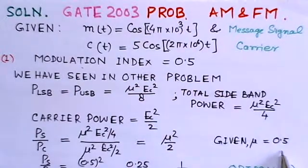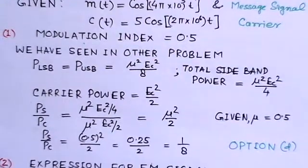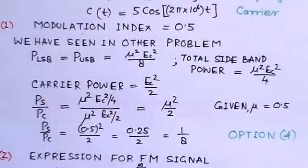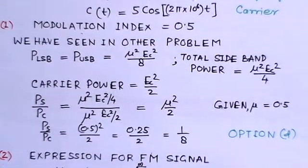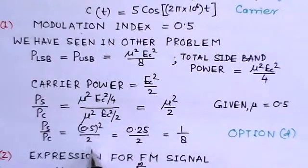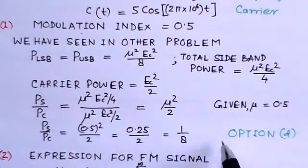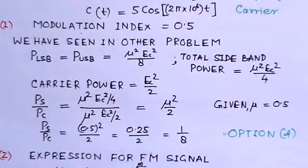Given that μ = 0.5, we substitute: Ps/Pc = (0.5)²/2 = 0.25/2 = 1/8. This corresponds to option D.